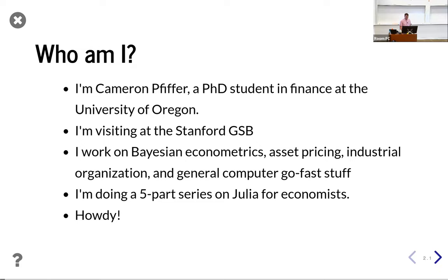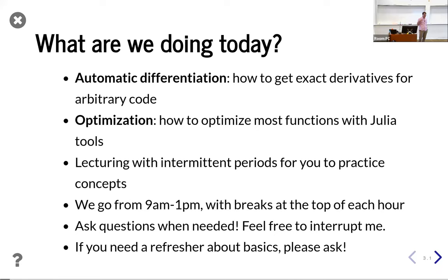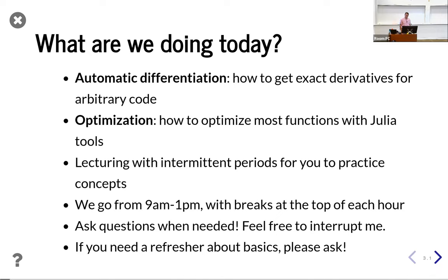Today we're basically going to be talking first about automatic differentiation, which is how you get exact derivatives for arbitrary code. This is a really nice feature of Julia — it happens to do fairly well. Automatic differentiation is a generally very difficult problem, but in Julia you can get a lot of things for free, which is really nice. Then we're going to talk about general optimization. The two packages I'm going to cover are Optim.jl, which does nonlinear optimization with simplex methods and gradient methods, and if you have Hessians you can use those as well.